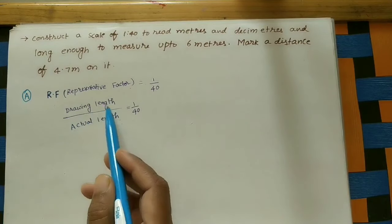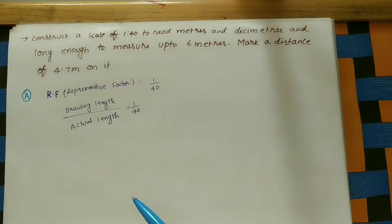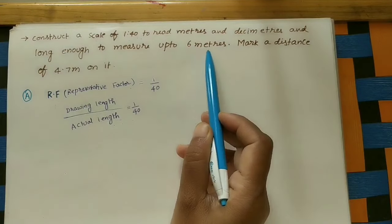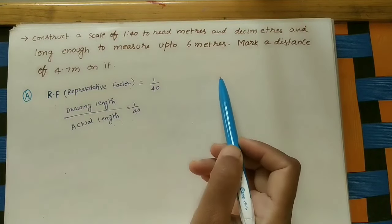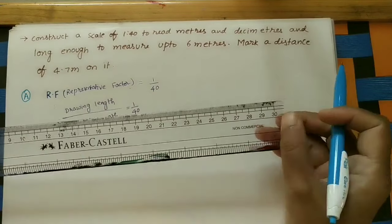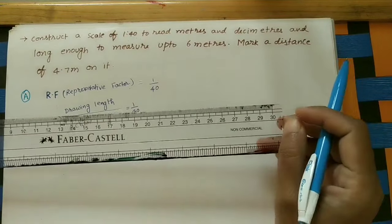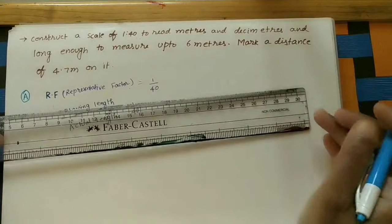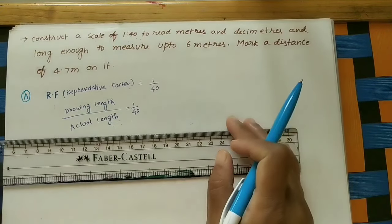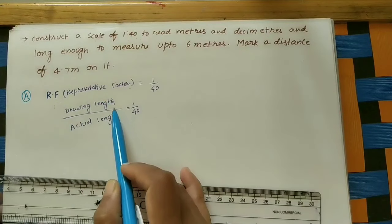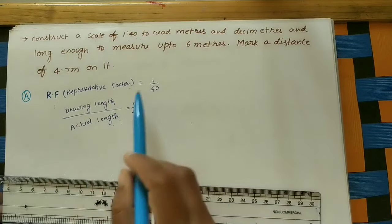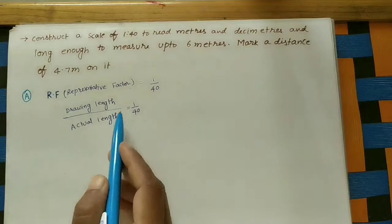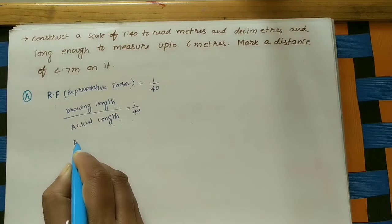We need to find how much line we have to draw for the scale — this is called drawing length. The actual length given is the maximum limit of the scale: up to six meters. One meter means 100 centimeters, so six meters means 600 centimeters. In a small space we can't do 600 centimeters, so we find the drawing length.